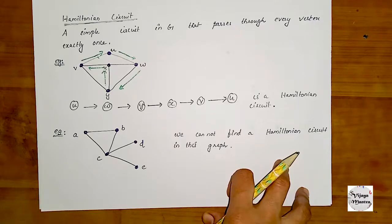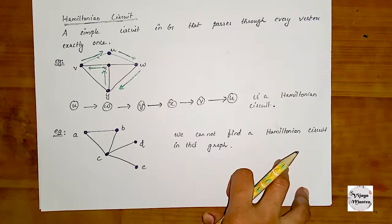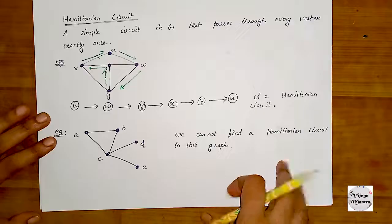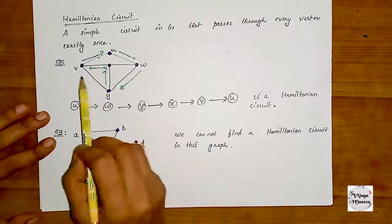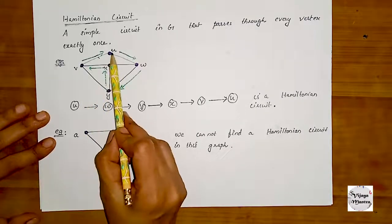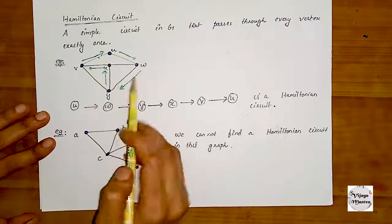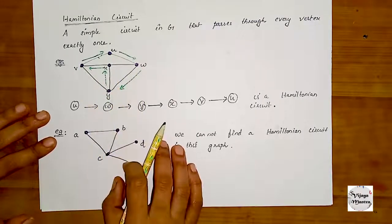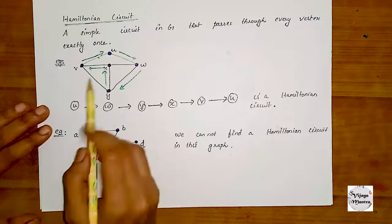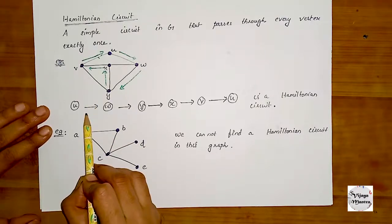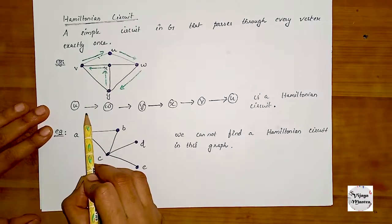If you start and end at the same vertex, that's why it's called a Hamiltonian circuit — visiting every vertex exactly once. For example, with vertices U, V, W, X, Y — this is a Hamiltonian circuit.